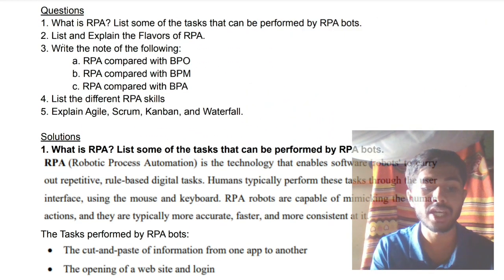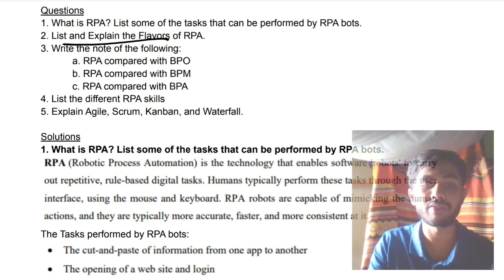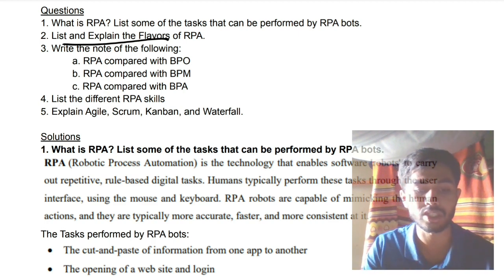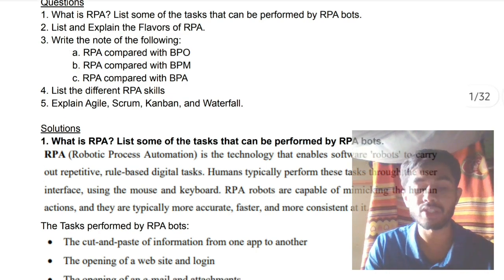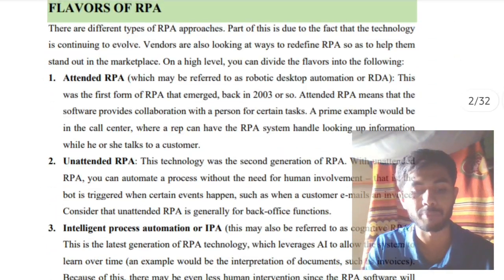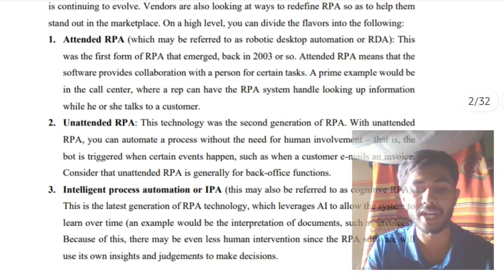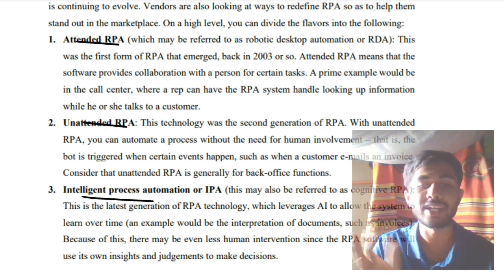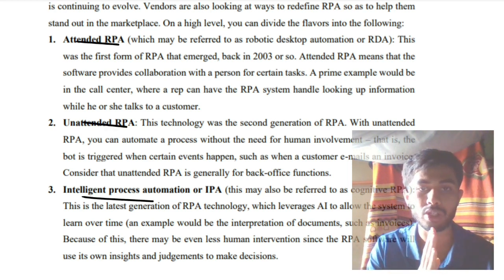Moving on, the second question is: list and explain the flavors of RPA. These first module questions are very expected and easy. The flavors of RPA are simply the types of RPA — there are three types: attended, unattended, and intelligent process. Attended means a human will be there and a robot will also be there, like in a call center.